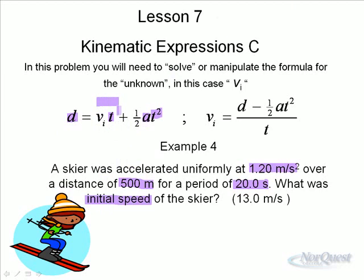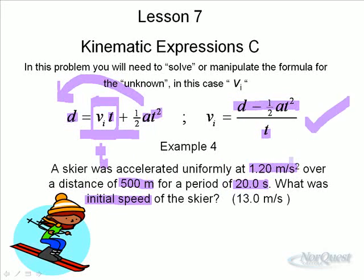To solve for the initial speed, you would isolate this term. How do you isolate that term? You move the other term to the other side. So you end up with d - ½at² on the left or on the top here. The only thing you're left with now is v_i×t. Well, to solve for that, you just divide by t. Whatever you do to one side, you have to do to the other. And there is your solution. Not too bad, really, but it's difficult for people to see that first time through. So keep practicing those ones.